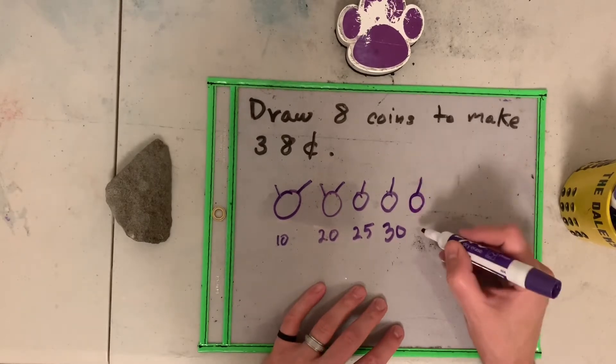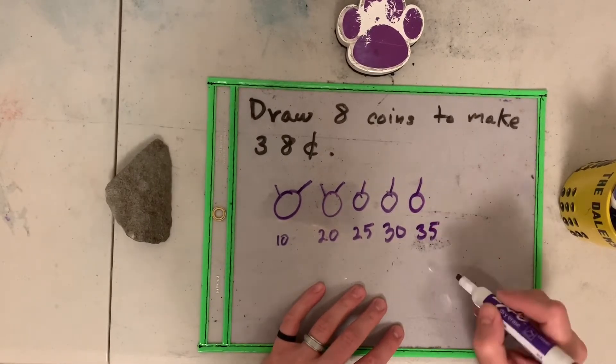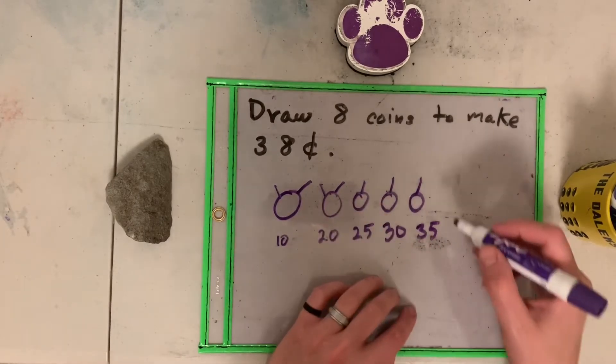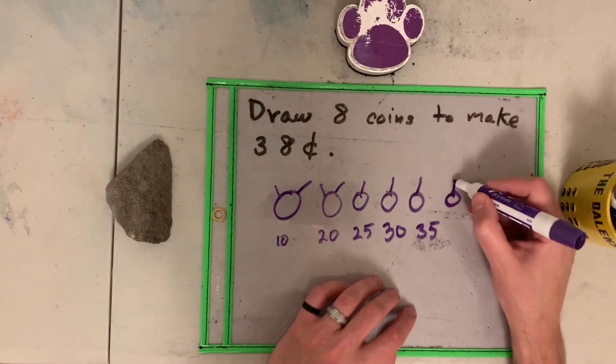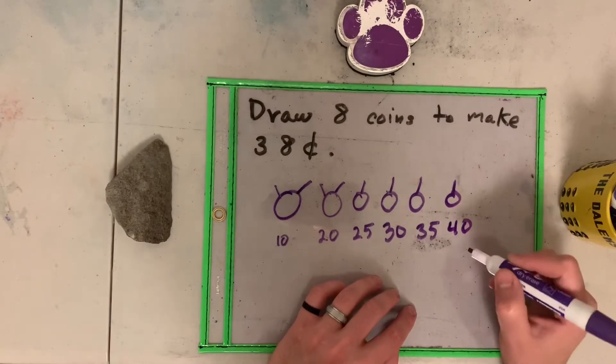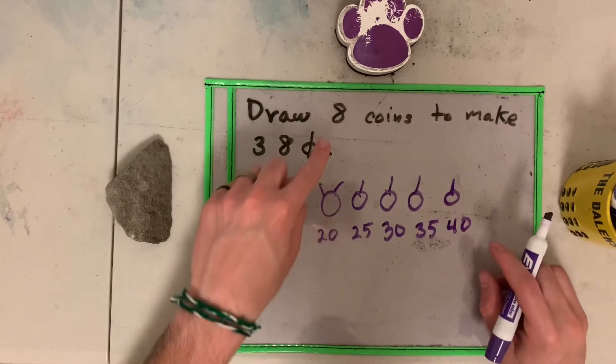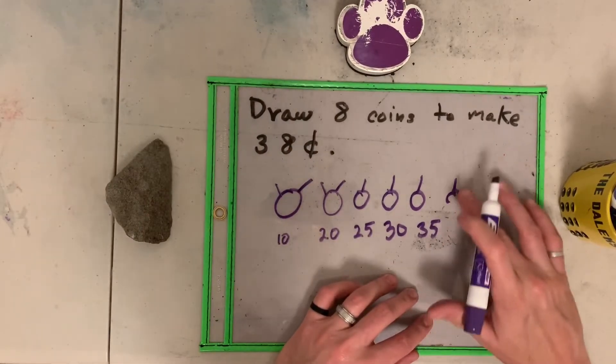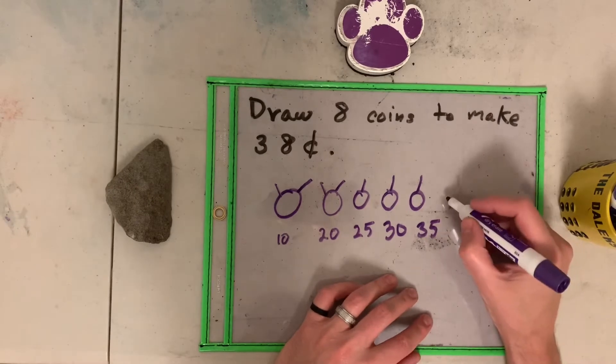And now we have thirty-five cents. We have ten, twenty, twenty-five, thirty, thirty-five. Let's add another nickel. Now we have forty cents. Uh-oh, I cannot use this one because it's thirty-eight cents. Esto es mucho, me pasé. So let's do pennies.